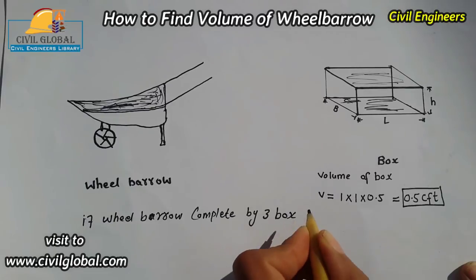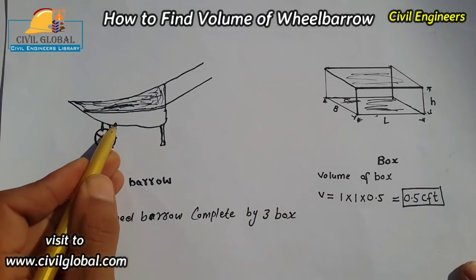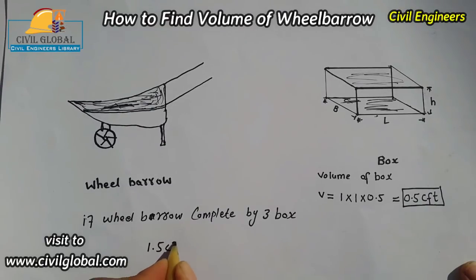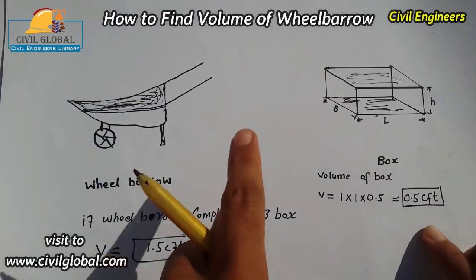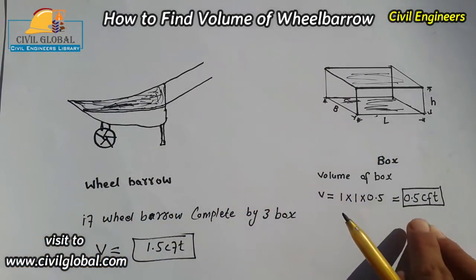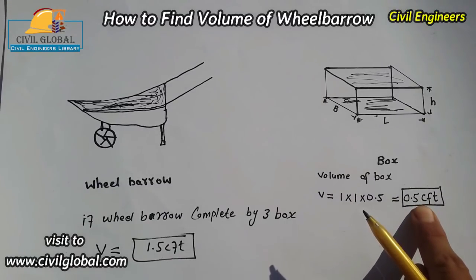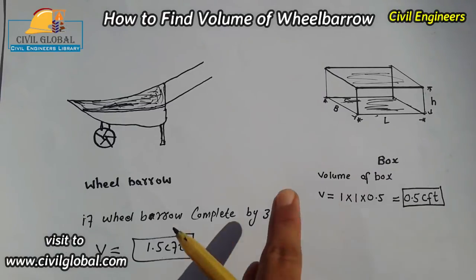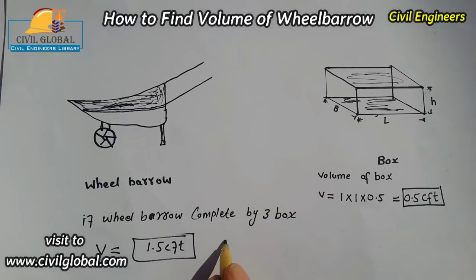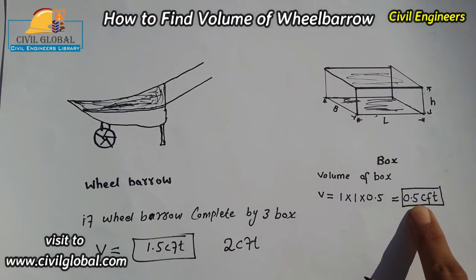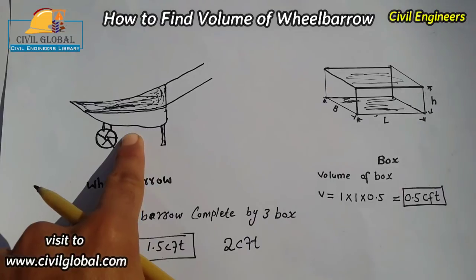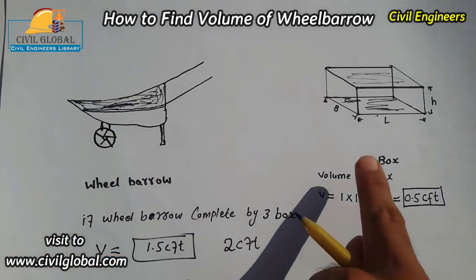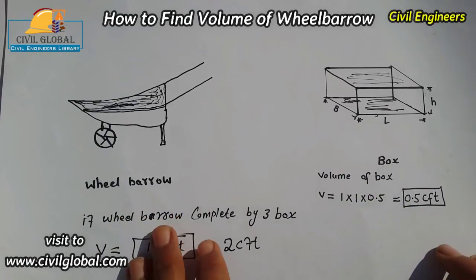For example, if the wheelbarrow is completely filled by three boxes — and each box volume is 0.5 cft — then the wheelbarrow volume is 1.5 cft. If it is completed by four boxes, the wheelbarrow volume becomes 2.0 cft. And if it is completed by two boxes, the wheelbarrow volume is 1.0 cft. This is very easy, but many students have a problem with this, so that is why I discussed this topic today.